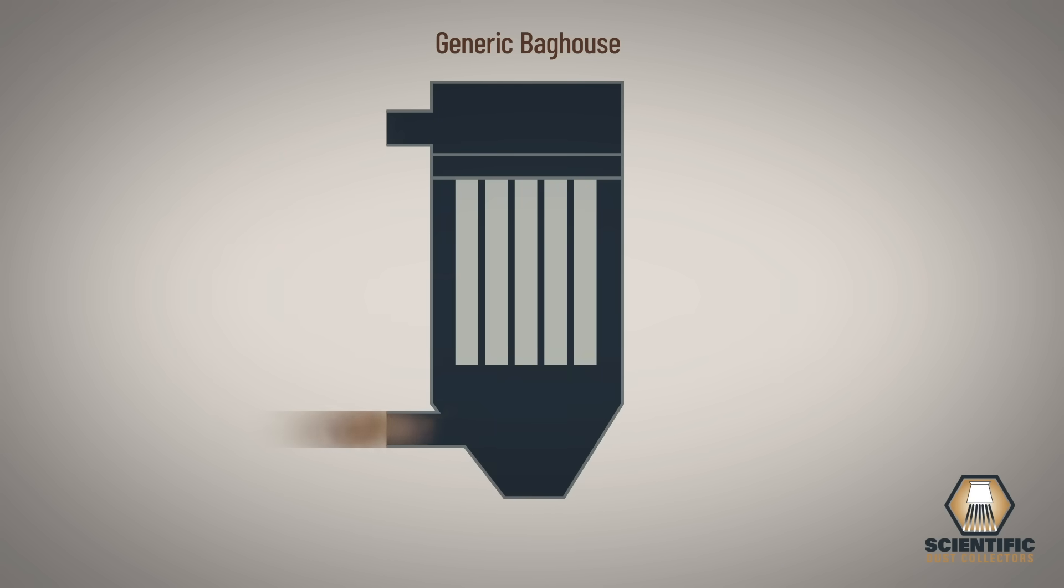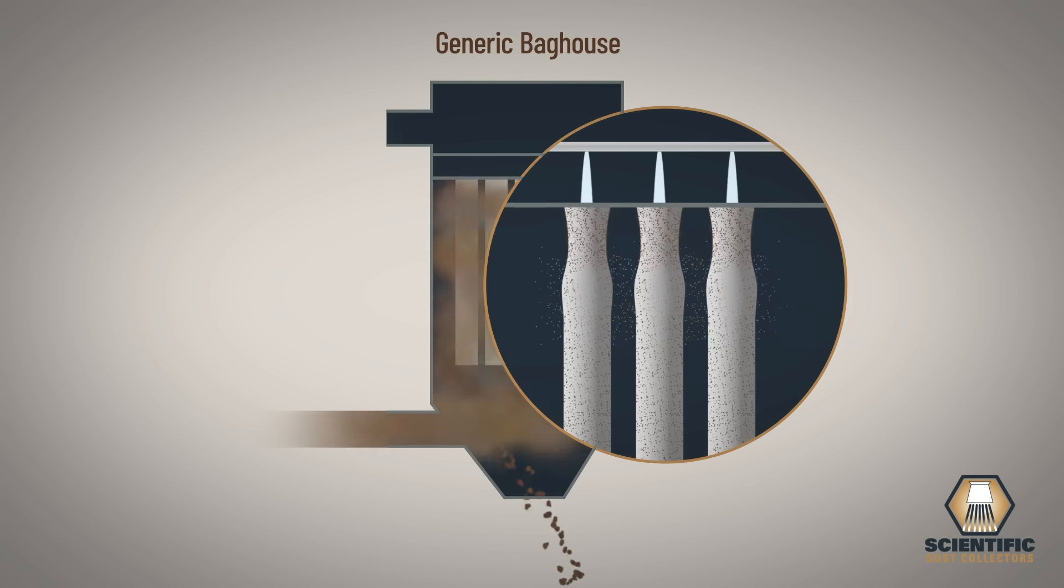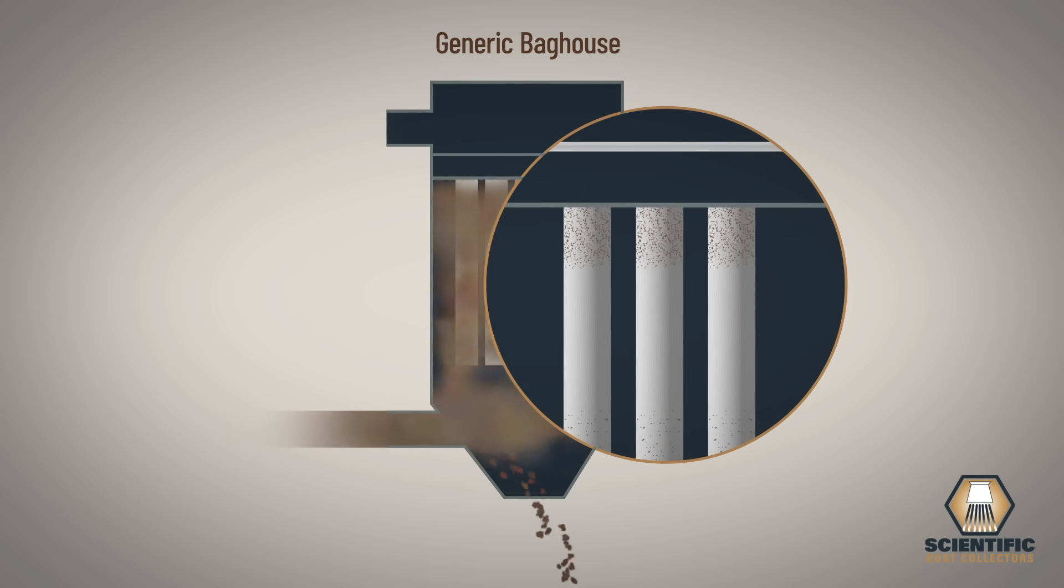In a generic bag house, dirty air enters the collector from the bottom at high velocity. This creates an upflow of dirty air in the collector and causes re-entrainment of dust on the filter media during the cleaning cycle.